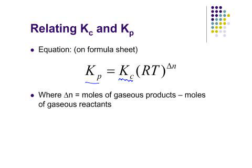And I believe it even tells you on the formula sheet that delta N is moles of gaseous products minus the moles of gaseous reactants. So it's not total products minus total reactants. It's gaseous products minus gaseous reactants.